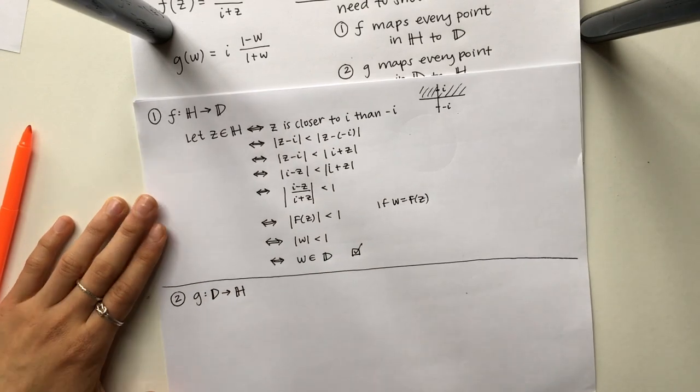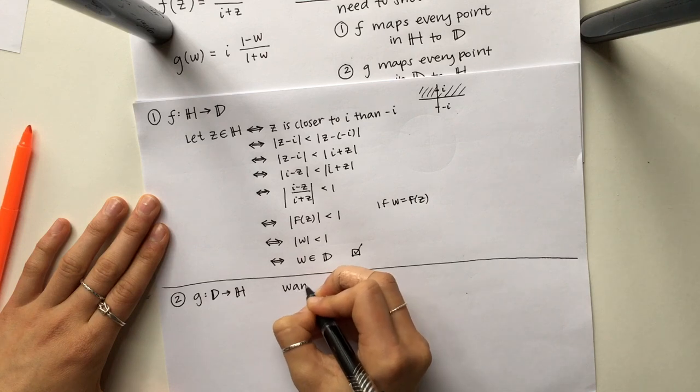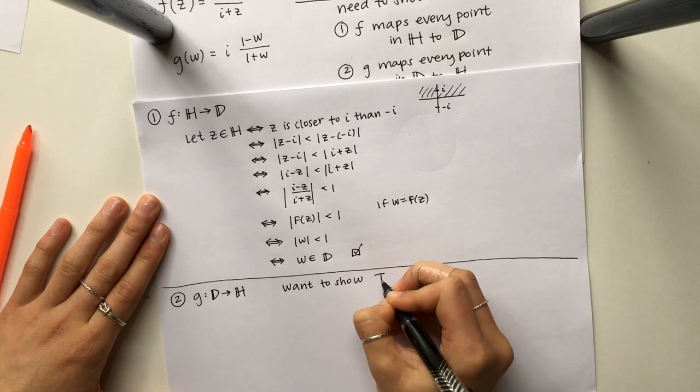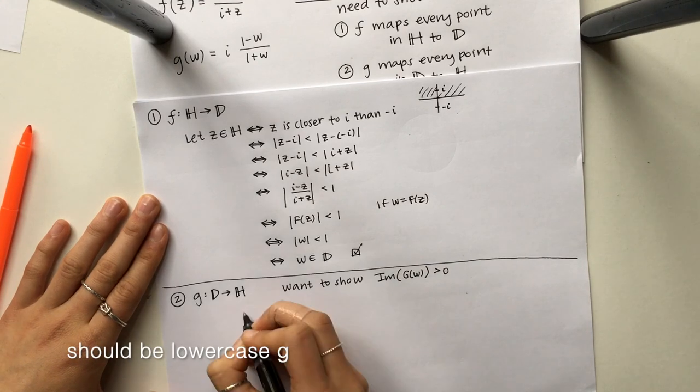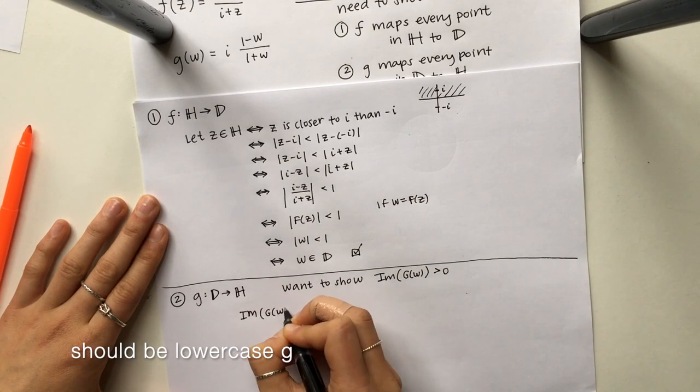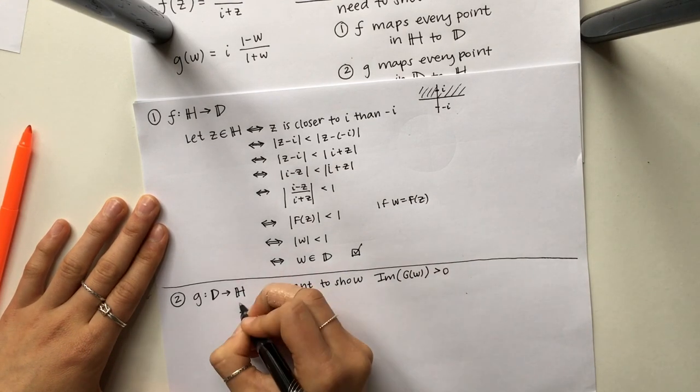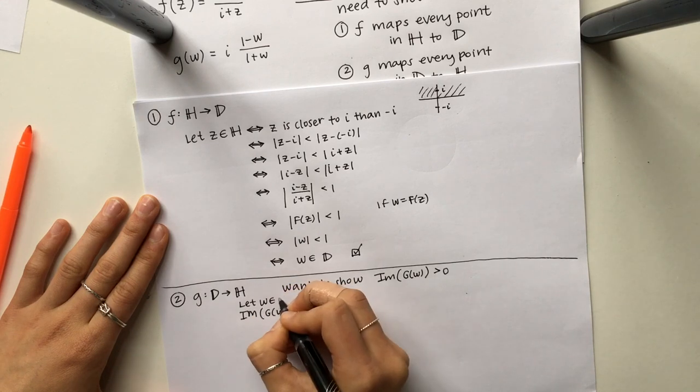Similarly we're going to do the same for g. Now we start with a point inside D and all I want to show is that the imaginary part of g of w is greater than zero, because that's what a point in H looks like. The imaginary part is positive.